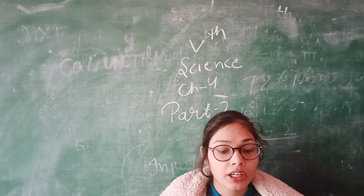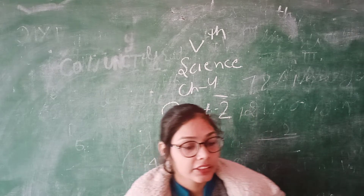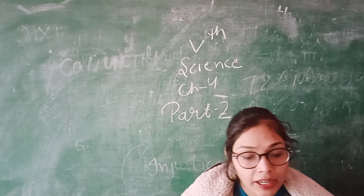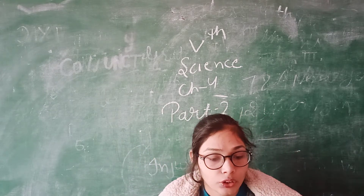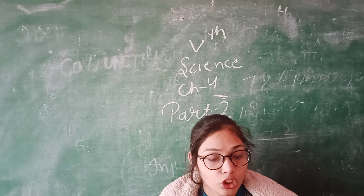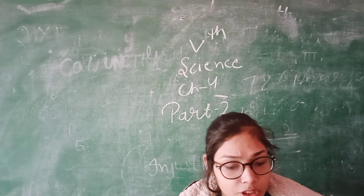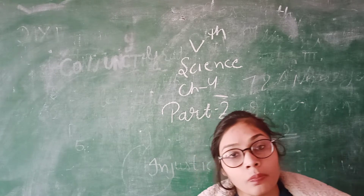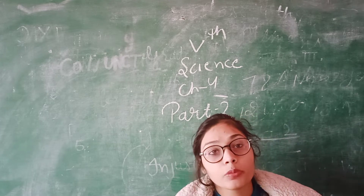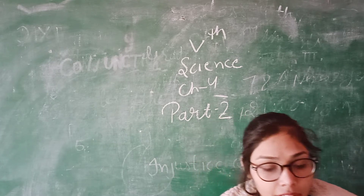Impurities are of two kinds. First, soluble. Second, insoluble. If we talk about soluble impurities, this type of impurity is like salt — it dissolves and mixes with water.